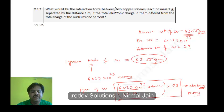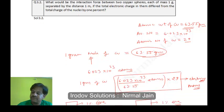In this question we are asked to find the interaction force between two copper spheres, each of mass 1 gram, separated by a distance of 1 meter, if the total electronic charge in them differs from the total charge of the nuclei by one percent. What does this question mean to say?